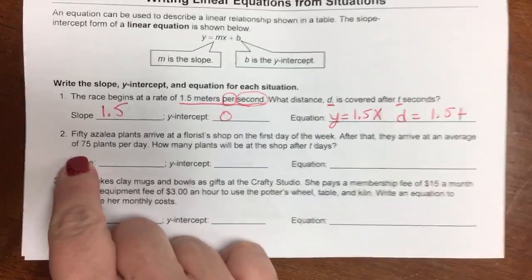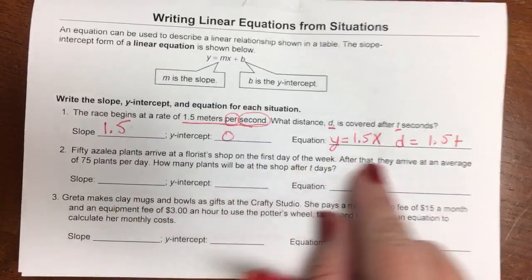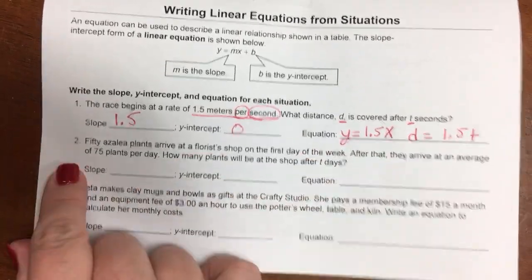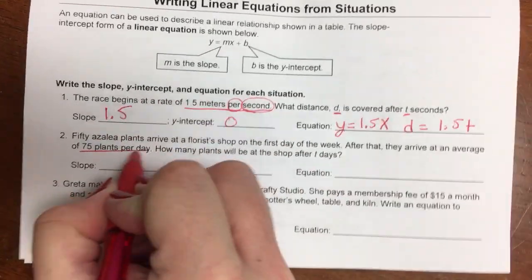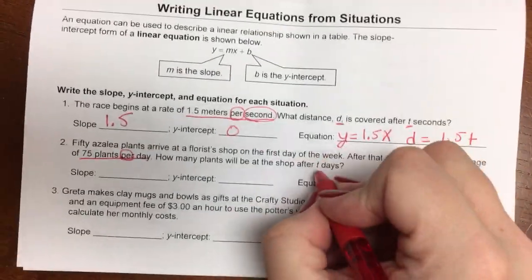All right, then example two, 50 azalea plants arrive at a florist shop on the first day of the week. After that, they arrive at an average of 75 plants per day. How many plants will be in the shop after t days?